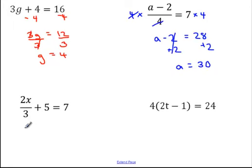Example 3: I have 2x divided by 3 plus 5 equals 7. First, I need to deal with the plus 5, so I'll subtract 5 from both sides. That gives me 2x divided by 3 equals 7 minus 5, which is 2.